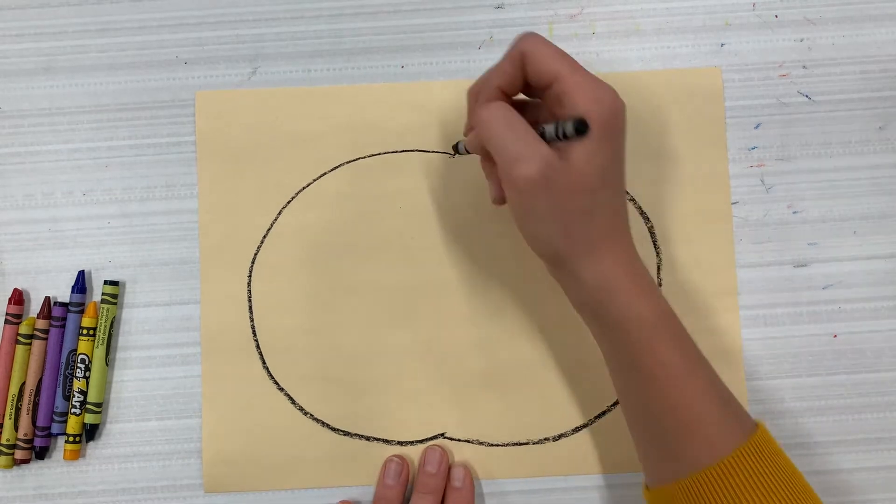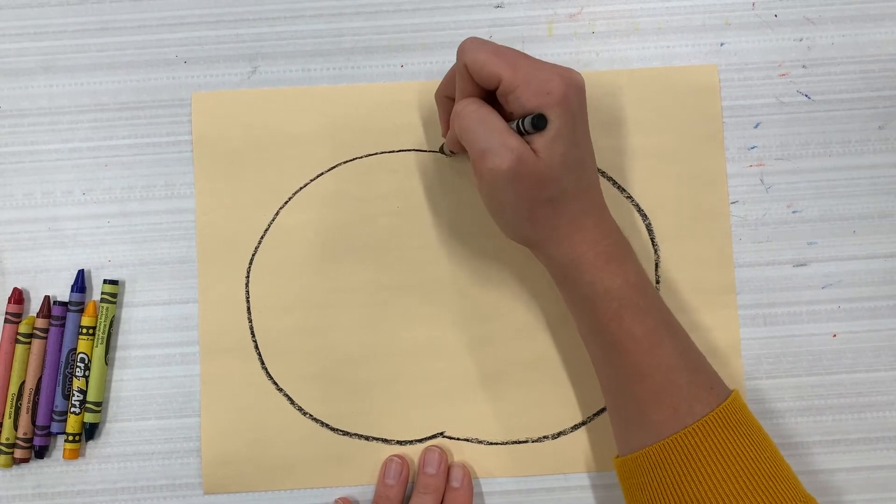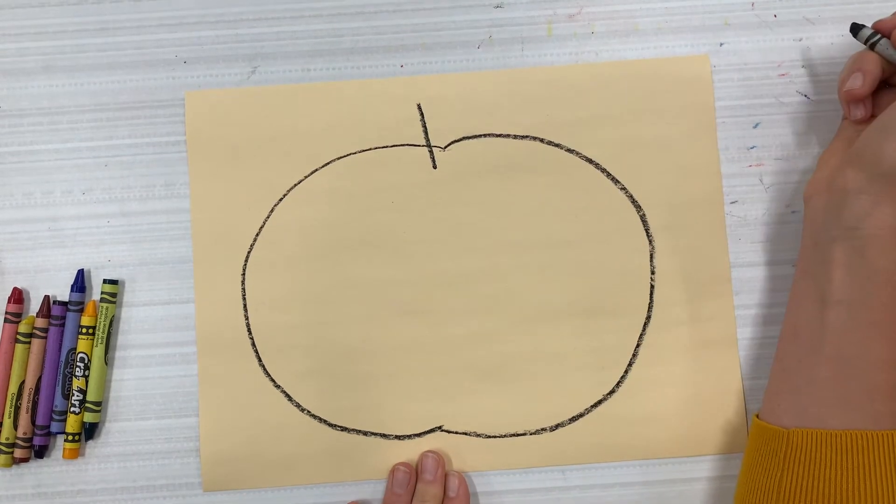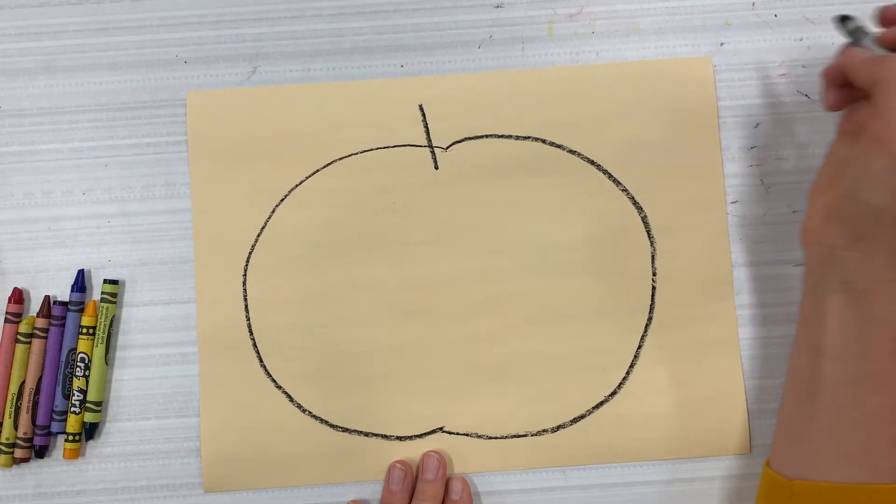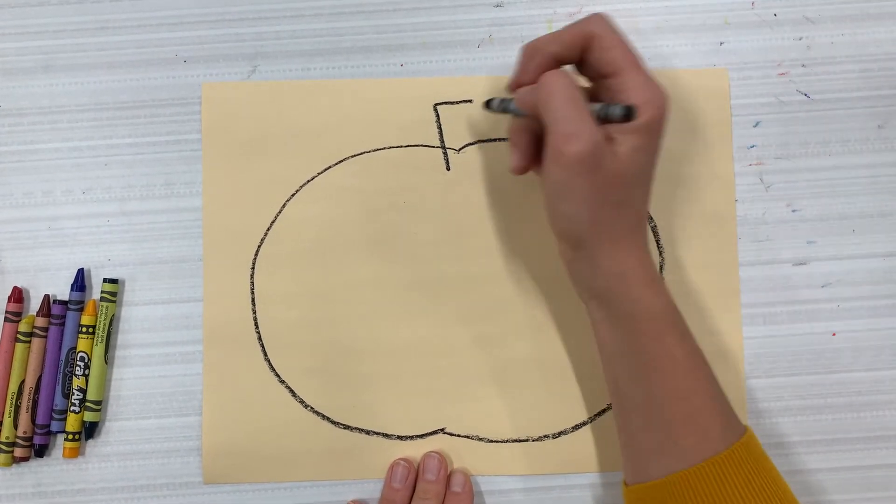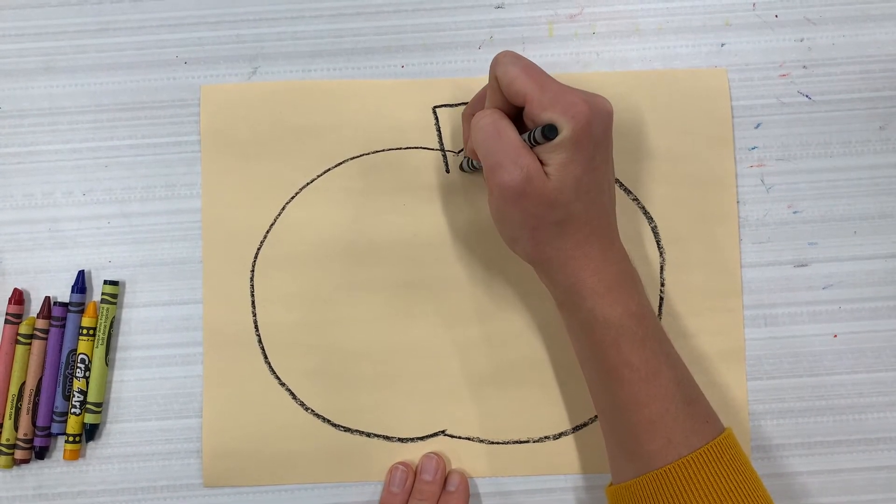So now I'm going to add a stem, so I'll go to the top and I'll draw a line that goes up. It can be slightly diagonal or curved, and then I draw a line that goes over, a horizontal line, and then down.